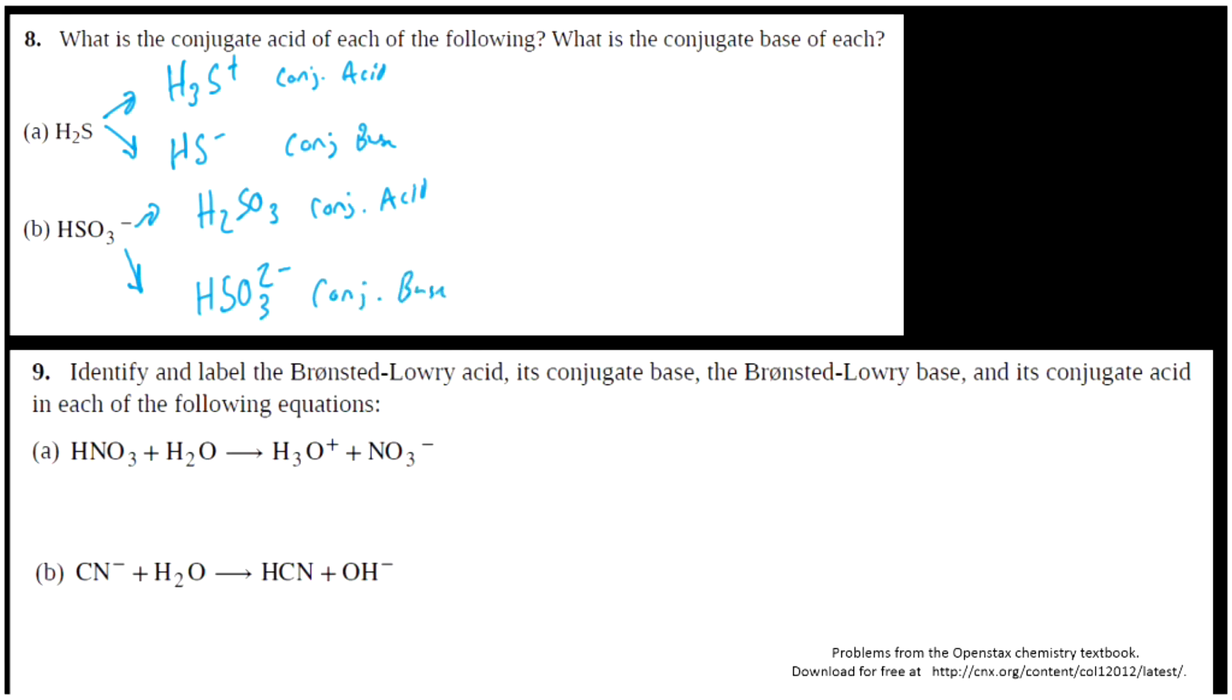Last little problem here before we wrap up this lesson. Identify and label the Bronsted-Lowry acid, its conjugate base, the Bronsted-Lowry base, and its conjugate acid in the following equations. So what we want to think about is what of these is gaining a hydrogen and what's donating. Here we see that we have HNO3 and then on this side, NO3-. So what's that NO3 done? It's lost a hydrogen ion. It's donated it.